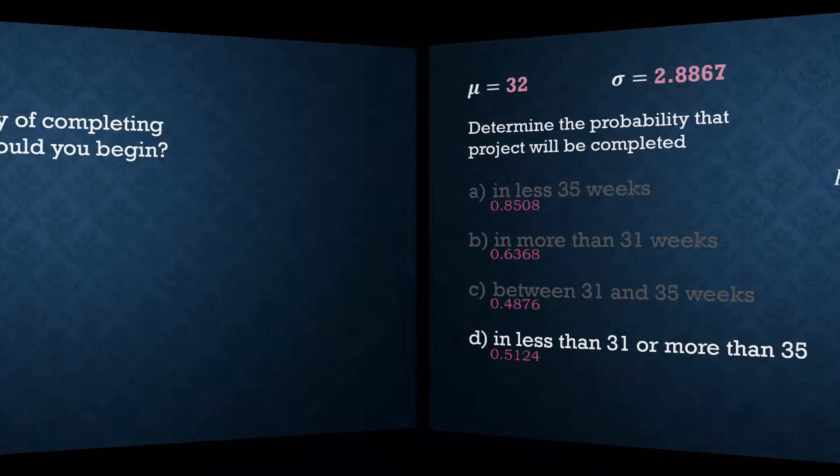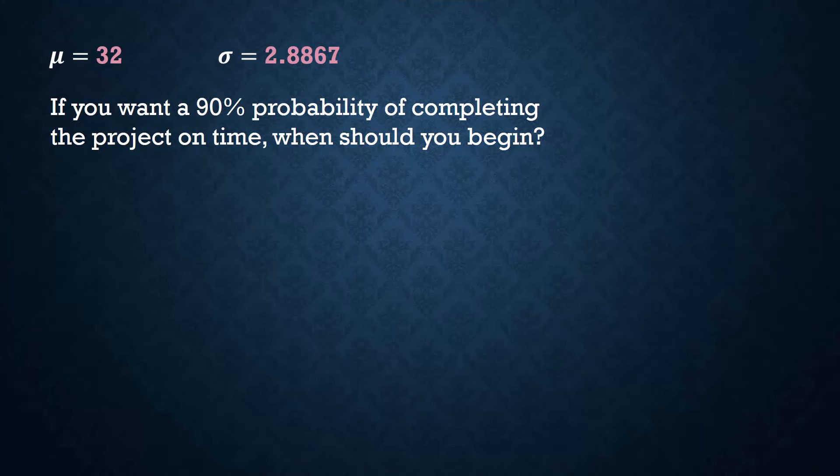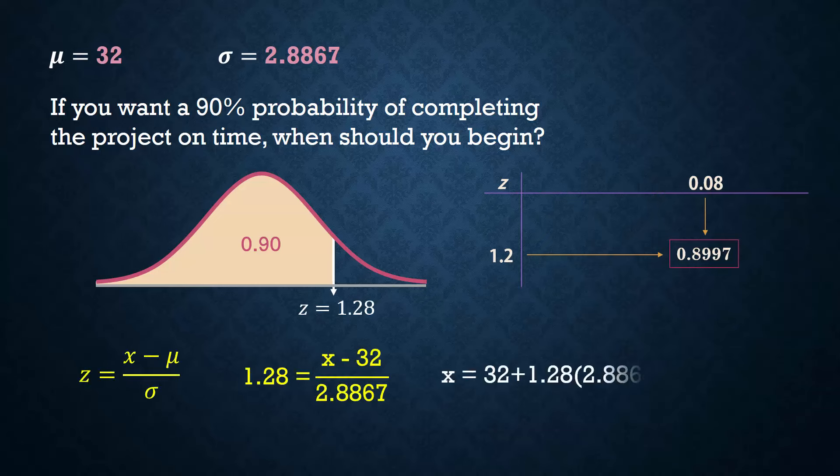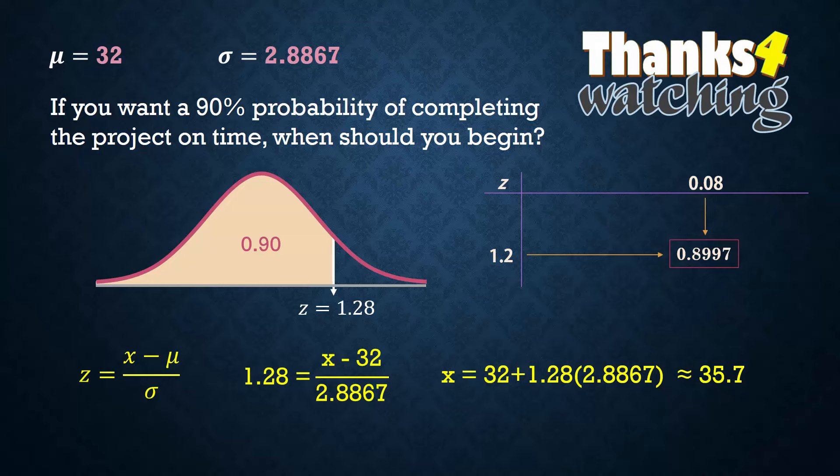Next, if we want a 90% probability of completing the project on time, we do a reverse lookup for a less than area of 0.9. This will correspond to a z-score of 1.28. And substituting that into the z-formula, we obtain a completion time of about 35.7. That is, the project should begin about 36 weeks earlier in order to be completed on time with a 90% probability. And that's it for this video. Thanks for watching.